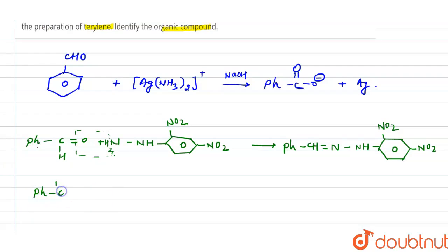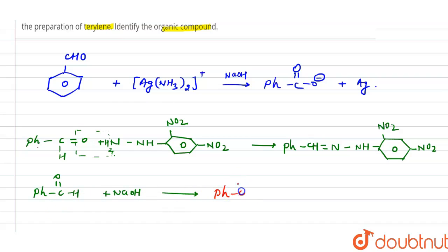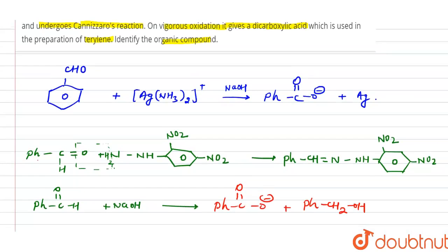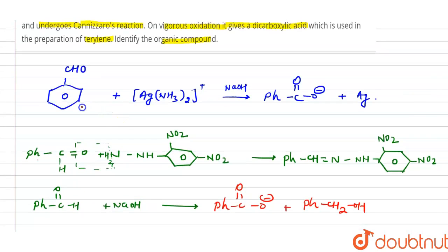Third, it can give a Cannizzaro reaction. In the Cannizzaro reaction, we take Ph–CHO. Since there are no alpha hydrogens, in the presence of NaOH, one molecule is oxidized to the acid (carboxylate) and another is reduced to the alcohol. That is your Cannizzaro reaction.